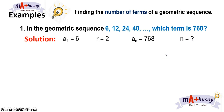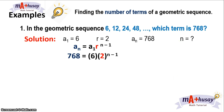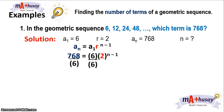Using the geometric sequence formula, a sub n equals the first term times common ratio raised to n minus 1, we substitute these values. We have 768 equals 6 times 2 raised to n minus 1. To solve for n, we have to divide first both sides of the equation by 6. Dividing both sides by 6, you'll have 128 equals 2 raised to n minus 1.